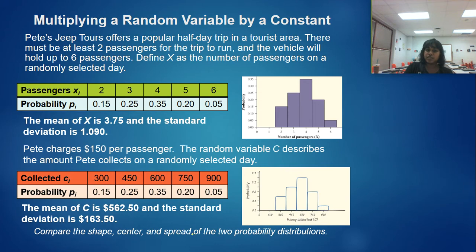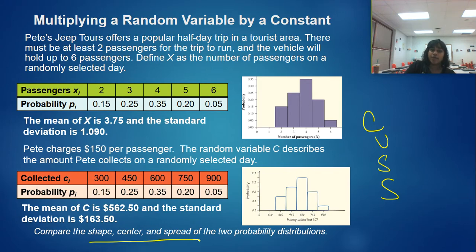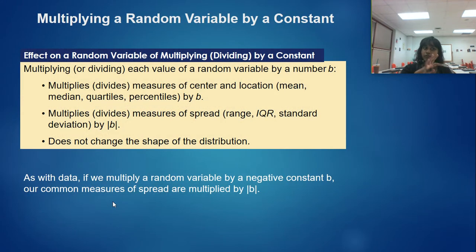How do I compare the shape, center, and spread — or CUSS — for these two probability distributions? For X, the center is a mean of 3.75, the spread is a standard deviation of 1.090, and the shape is approximately symmetric. Then comparing to C, the mean of X is 3.75 and the mean of C is 562.50. You would definitely CUSS this out when asked to describe or compare these distributions.